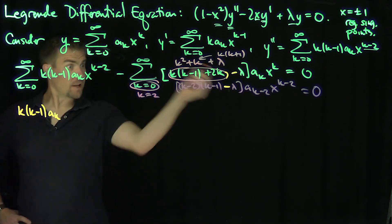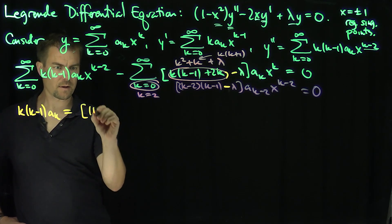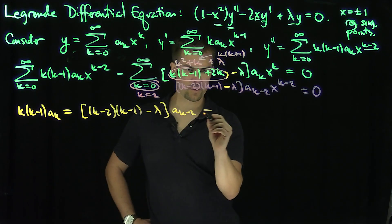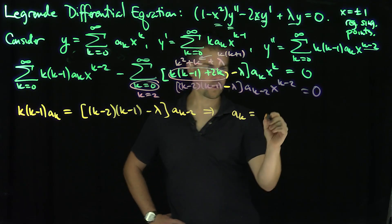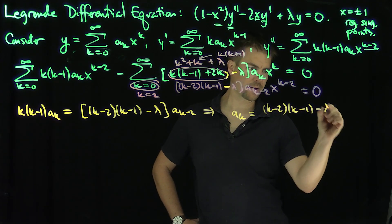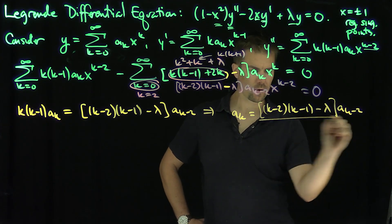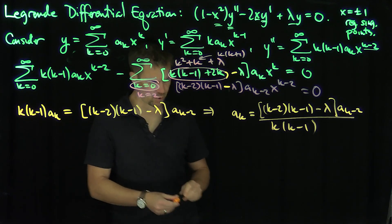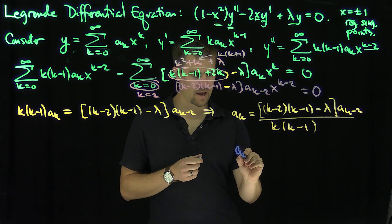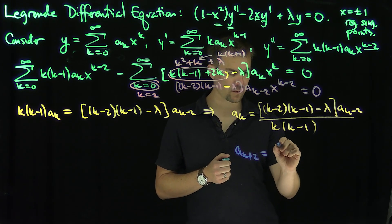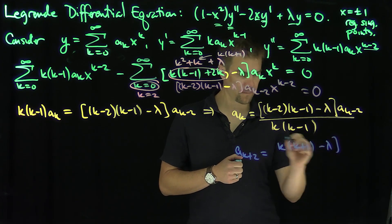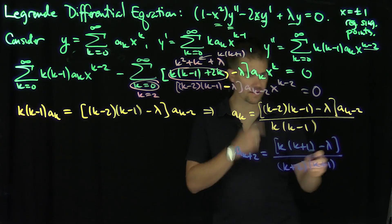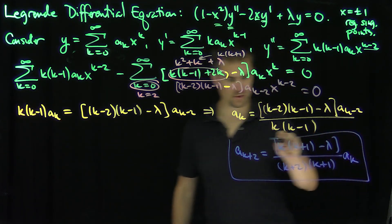This gives us the recursion relationship: a_k equals [(k-2)(k-1) - λ]·a_{k-2} divided by k(k-1). Shifting up by two units to make it tidier, we get a_{k+2} = [k(k+1) - λ] / [(k+2)(k+1)] · a_k. That is our recursion relationship for the coefficients of the Legendre differential equation.